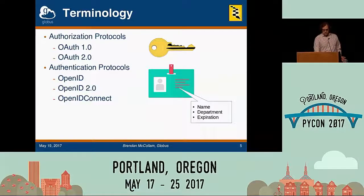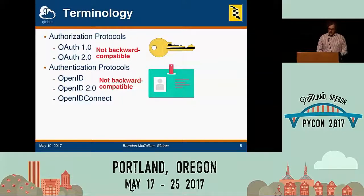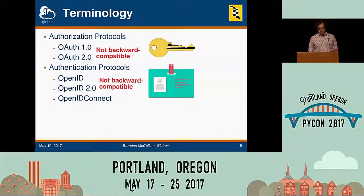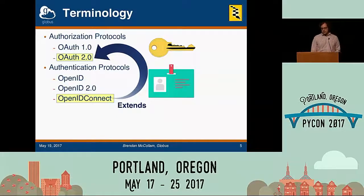These various protocols are not backward compatible with one another — this is really important. When I first started learning about this, I wasted a lot of time going down rabbit holes, reading about the wrong thing. Googling for OAuth gives you OAuth 1 results that aren't applicable to OAuth 2. Reading about OpenID 2 won't necessarily help you implement OpenID Connect. Other than the fact that the names are similar, these protocols have basically nothing to do with one another in terms of implementation. However, there is one important relationship: OpenID Connect is actually an extension of OAuth 2. So any OpenID Connect server is also an OAuth 2 server — OpenID Connect is a strict superset of OAuth 2.